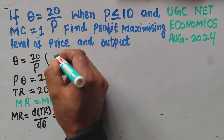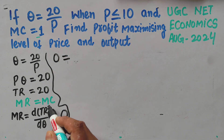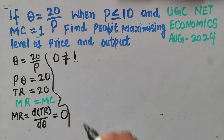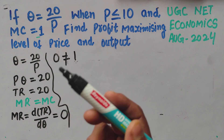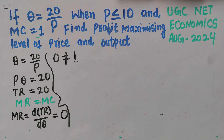Using the profit-maximizing condition MR = MC, we get 0 = 1, which is not possible. That means this method of applying MR = MC is not feasible here — it will not give us the profit-maximizing price and output. We need a different approach.